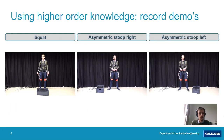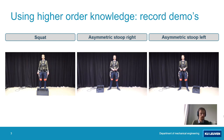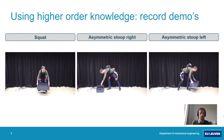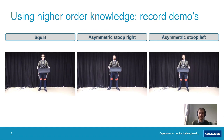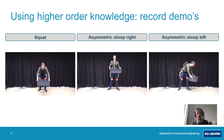To be able to use higher-order knowledge about the motions being executed, the exoskeleton needs to have access to a database of known motions. To create this database, I recorded myself while performing different types of motions, using the sensors on the exoskeleton to record myself. I performed squat motions, asymmetric stoop left motions, and asymmetric stoop right motions.